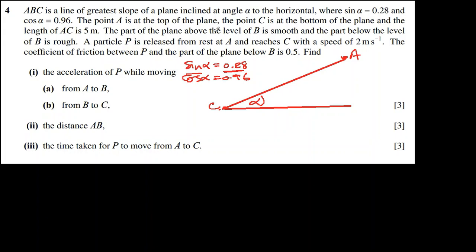The part of the plane above the level of B is smooth. B is somewhere here, and it is smooth here, that means mu is 0. And the part below is rough. A particle P is released from A, this position, and reaches C with a speed of 2 meters per second. The coefficient of friction between P and the part below B is 0.5. So here, mu is 0.5.